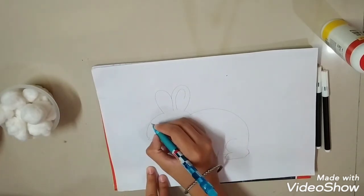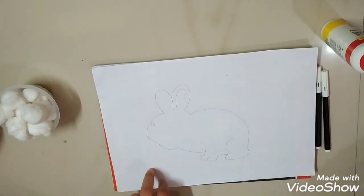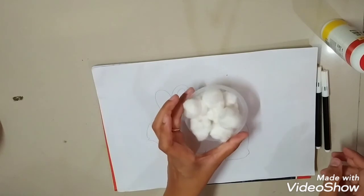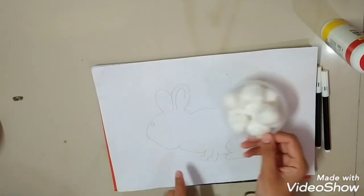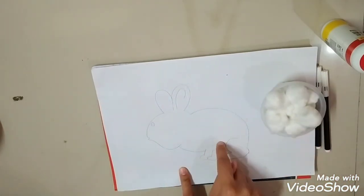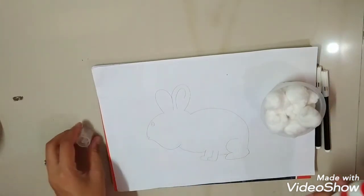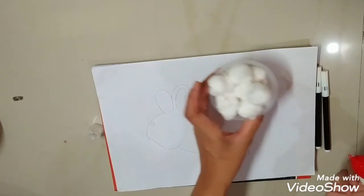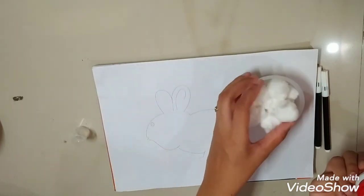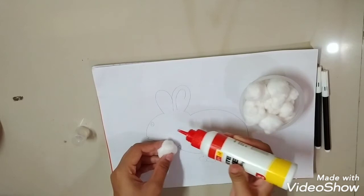Now I will draw its eyes. Now I am taking these cotton balls and you are going to stick it on the rabbit. In which color is the rabbit? Rabbit is in white color. Now I am taking fevicol and sticking the cottons one by one.